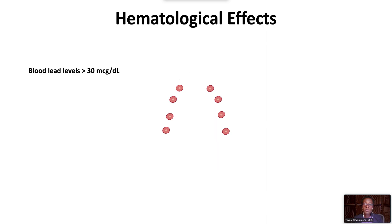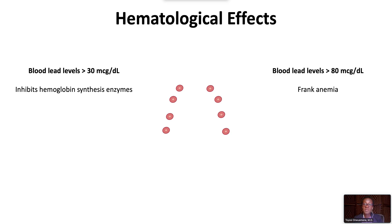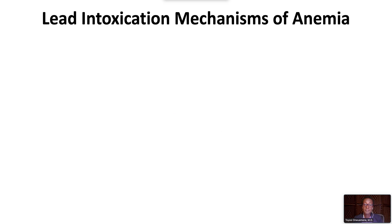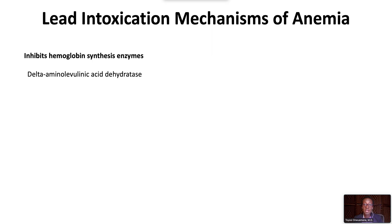Lead levels greater than 30 micrograms per deciliter inhibit enzymes of hemoglobin synthesis. When blood lead levels exceed 80 micrograms per deciliter, frank anemia develops. Lead inhibits enzymes involved in hemoglobin synthesis, including delta-aminolevulinic acid dehydratase and ferrochelatase. Inhibition of ferrochelatase inhibits the insertion of iron into the porphyrin ring and leads to creation of free erythrocyte protoporphyrin (FEP) and zinc protoporphyrin (ZPP), when zinc is inserted instead of iron.